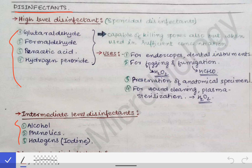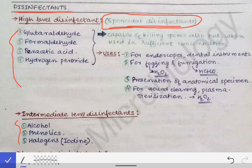The main point about high-level disinfectants is that they are sporicidal — they can kill the spores. So they are also called sporicidal disinfectants. The examples of high-level disinfectants are glutaraldehyde, formaldehyde, peracetic acid, and hydrogen peroxide. Please remember these names — there are many others, but these are the most important high-level disinfectants.